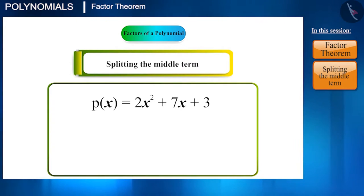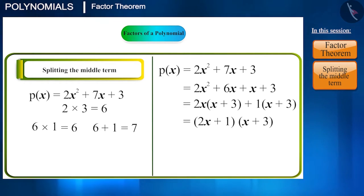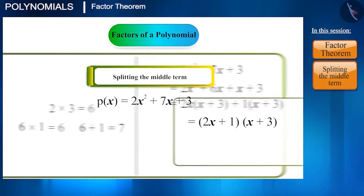As you all know, here we will multiply the coefficient of x², that is, 2, and the constant 3 to get 6. And then, find two such numbers whose product is 6 and sum is the coefficient of the middle term, that is, 7. The numbers whose product is 6 and sum is 7 are 6 and 1. Now, we will split the middle term and write it like this.